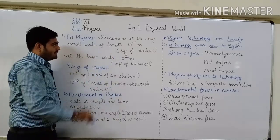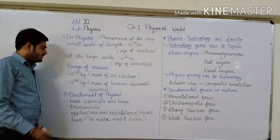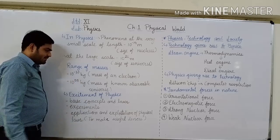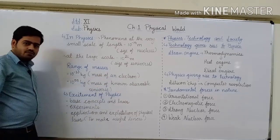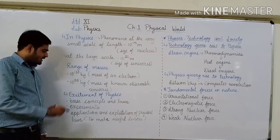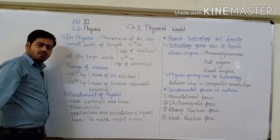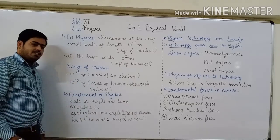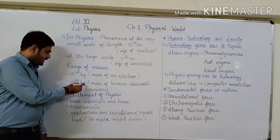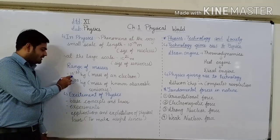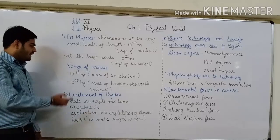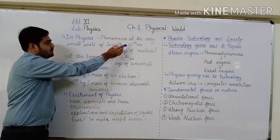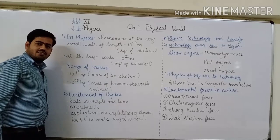So this is the range of length. In the same way, if we measure mass, the range of masses starts from 10 raised to minus 30 kg, which is the mass of an electron, and at large scale the mass is 10 raised to 55 kg, which is the mass of the universe. So the range of mass is from 10 raised to minus 30 kg to 10 raised to 55 kg, and the range of length is from 10 raised to minus 14 meter to 10 raised to 26 meter.